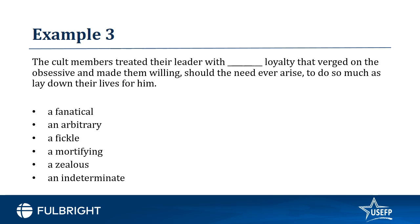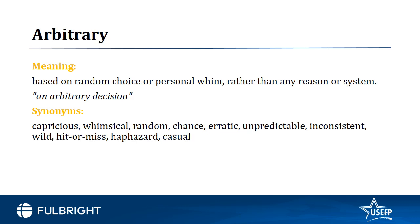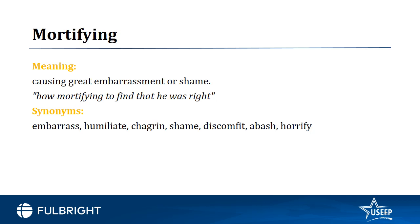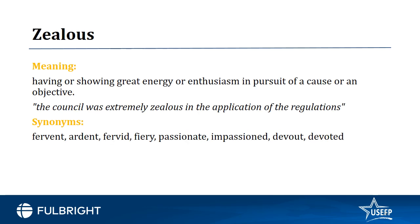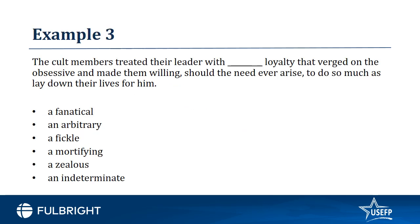Let's quickly go over the meanings. Fanatical means obsessively concerned about something — this is close to the word we guessed should fit in the blank. Arbitrary means based on a random choice. Fickle means changing one's loyalties or affections frequently. Mortifying means embarrassment. Zealous means showing great enthusiasm in pursuit of an objective. Indeterminate means not exactly known, established, or defined. Since the loyalty of the cult members bordered on the obsessive and was extremely intense, fanatical and zealous are the words that best fit.